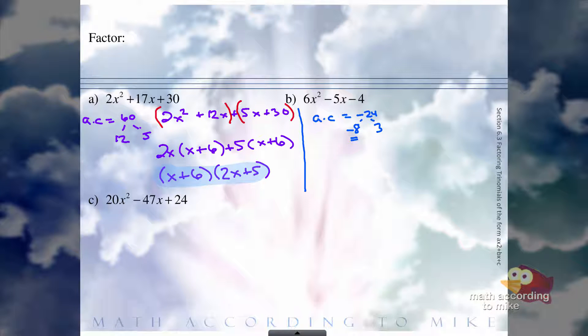So now we can rewrite the trinomial as 6x squared minus 8x plus 3x minus 4. So instead of that negative 5x, now we have a negative 8x plus 3x. And now we group.